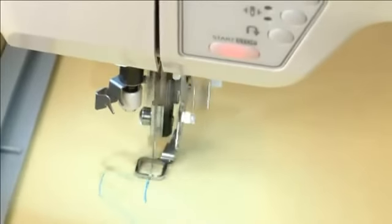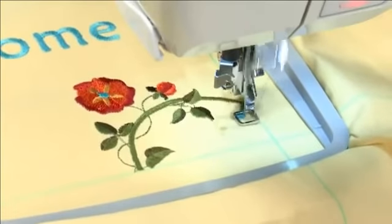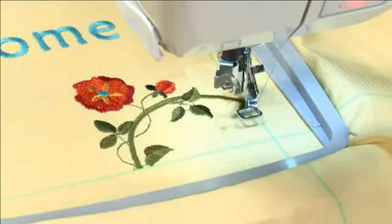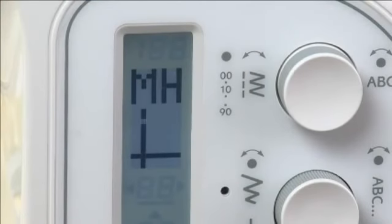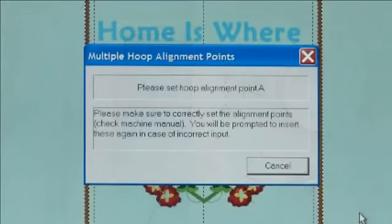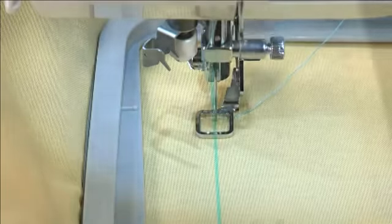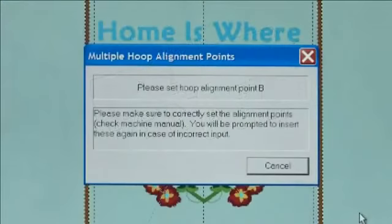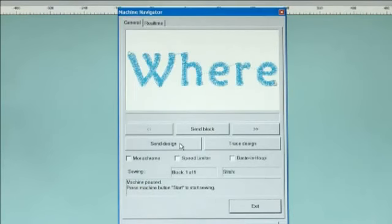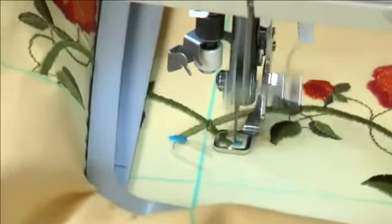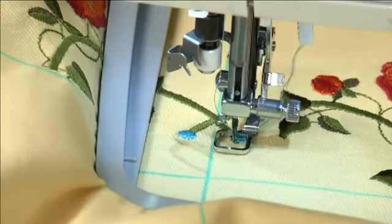Embroider the design section. After all colors of the design from hoop one have been embroidered, the screen will prompt you to enter the information for data area two. Re-hoop the fabric for data two. The machine display will show the cross line positions in the hoop for data two and the input point A blinking. Input the A, B and C points. Send the data two design to the machine. Embroider the data two design. Follow the same procedure for data three and data four.